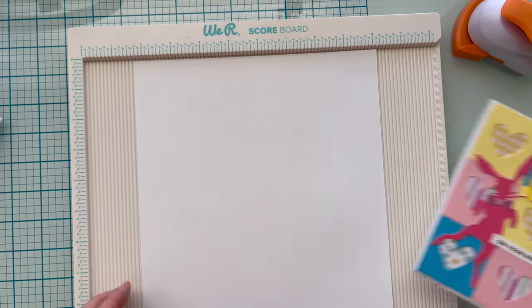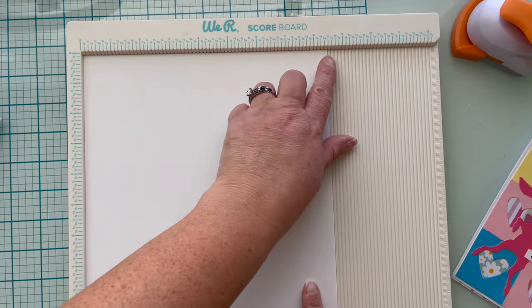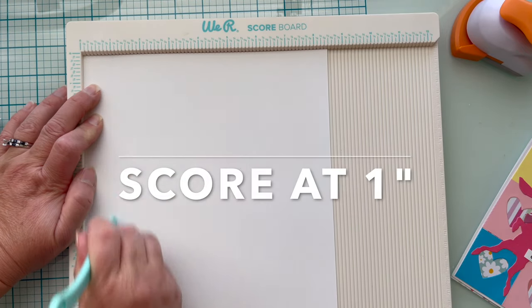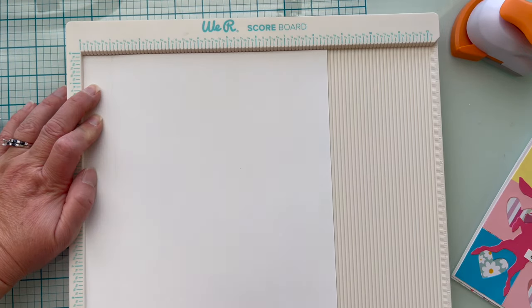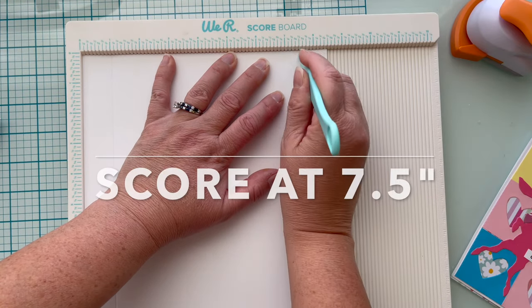So I made this cute six by six card a few videos ago and I'm going to use a standard eight and a half by eleven inch paper. On the eight and a half inch side I'm going to score at one inch and at seven and a half inches.